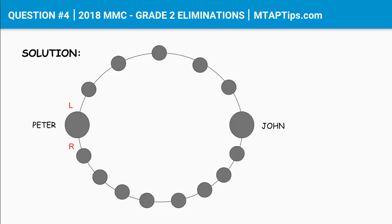Now, the question was: what is the total number of children in the circle? So basically, we just have to add 5 plus 8. But don't forget that Peter and John are also part of the circle. Although it wasn't mentioned if they are also children or not, it wasn't mentioned that they are adults either. So we should consider them as children as well, because they are part of the circle. So we have to add plus 2, and we'll get a total of 15. There are 15 children in the circle.